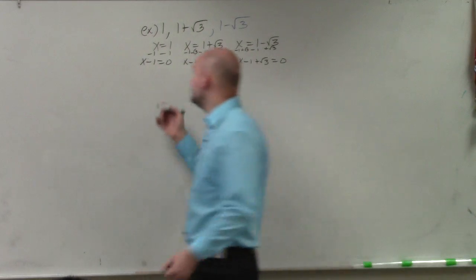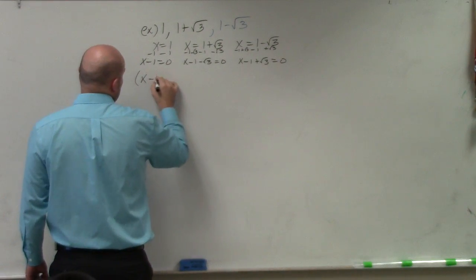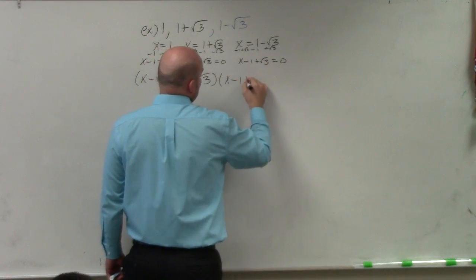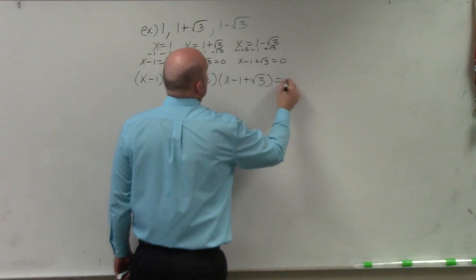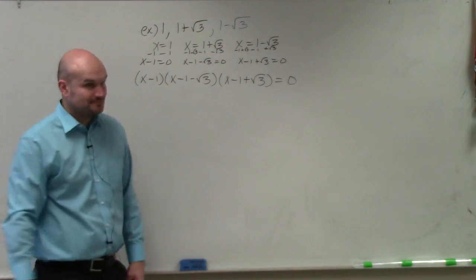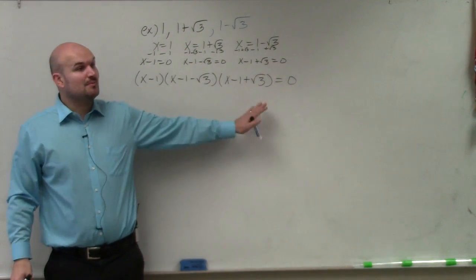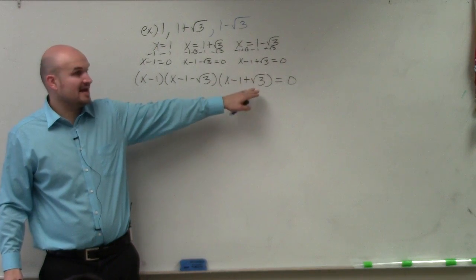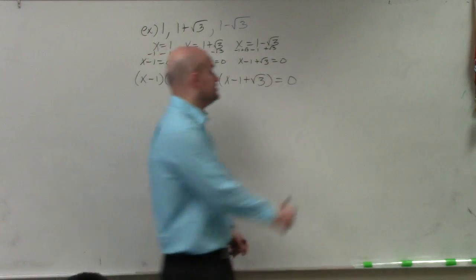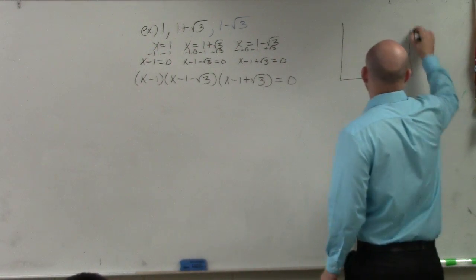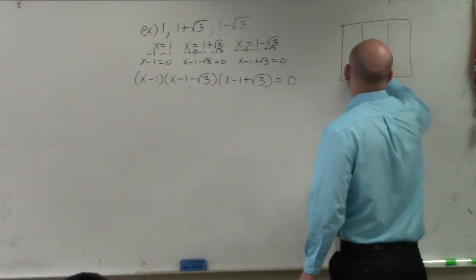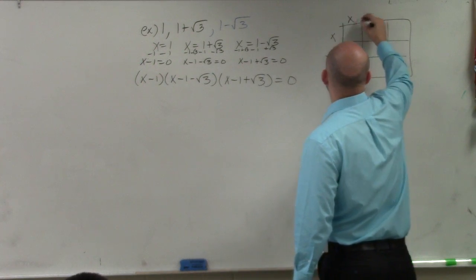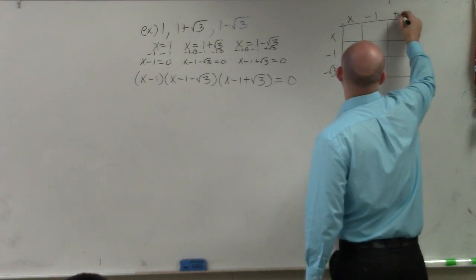Now that I have them all equal to zero, I have: x minus 1, times x minus 1 minus the square root of 3, times x minus 1 plus the square root of 3. If you want to multiply these out, please feel free — there's nothing wrong with multiplying these out as trinomials. You could create a trinomial and do x minus 1 minus the square root of 3, times x minus 1 plus the square root of 3.